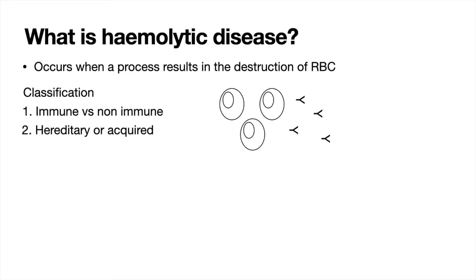Next, we have hereditary or acquired causes. Hereditary means the disease has been inherited from the parents — an example is G6PD deficiency, an X-linked recessive condition where increased oxidative stress occurs due to the missing G6PD enzyme. An acquired cause would be an ABO-mismatched blood transfusion, causing antibodies to be produced against the transfused blood, resulting in hemolytic disease.